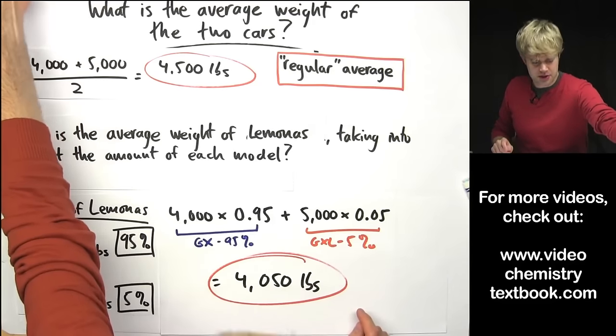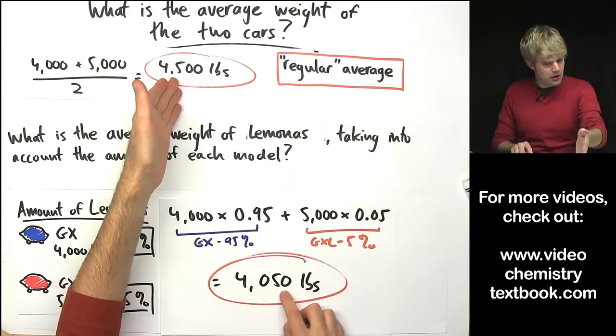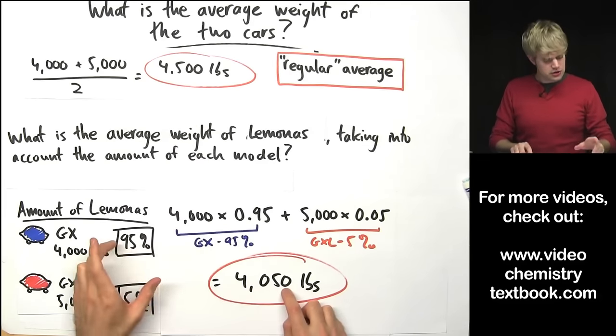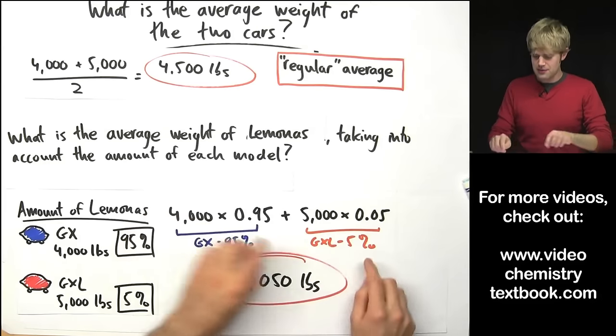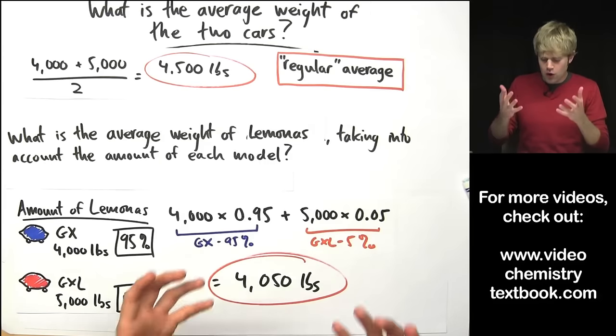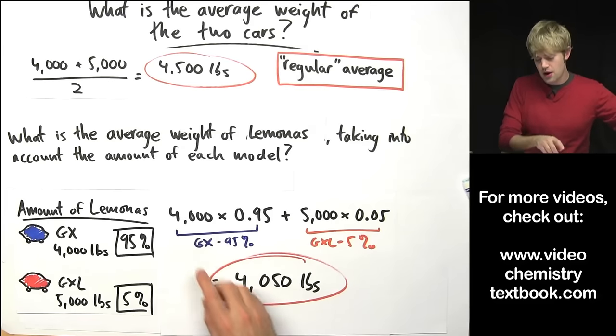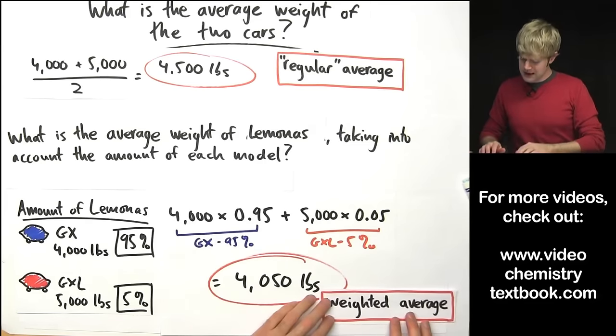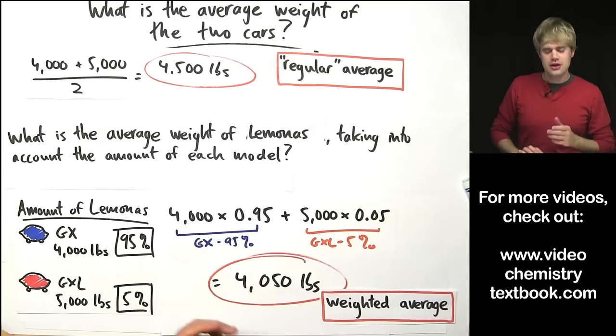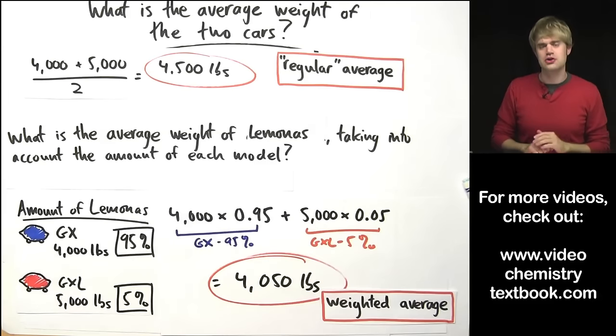And so because there are so many more of the GXs the average isn't right in the middle. The average is much closer to the weight of the GXs and because we have very few of the GXLs their weight doesn't have a whole lot of impact on this final average. I mean it's higher than 4,000 but it's not right in between. And so this calculation is what we refer to as a weighted average where we take into account the amount or the abundance of how much we have of each thing.